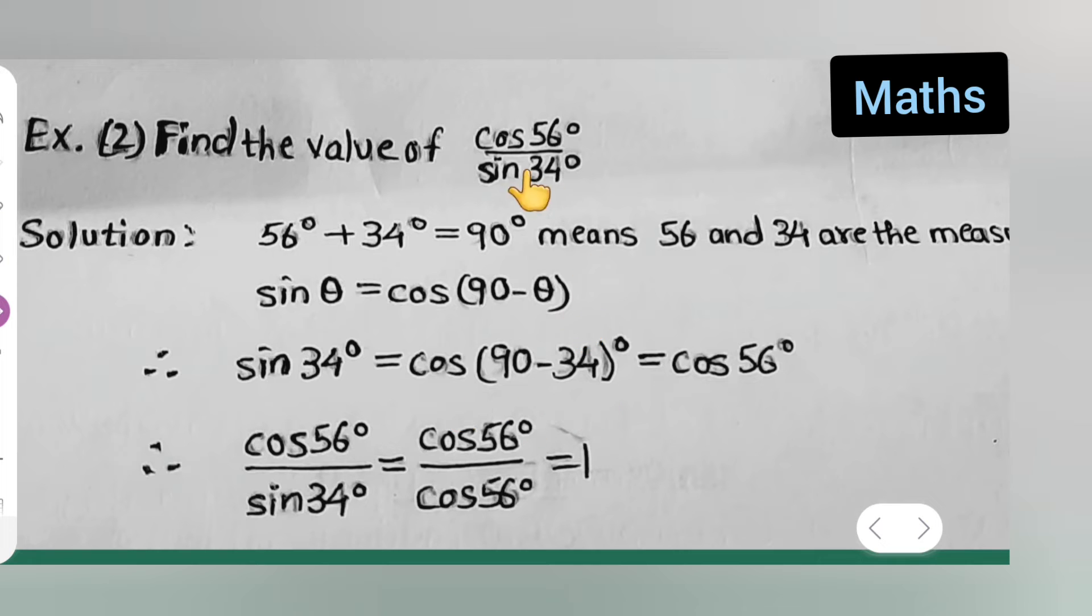Over here, now which is equal to cos of 90 minus 34 will be 56. Now cos of 56 degree upon sin of 34 degree, I have taken from here.